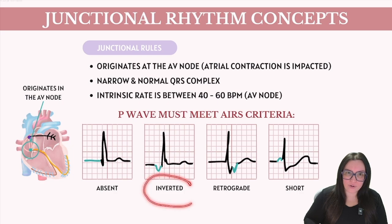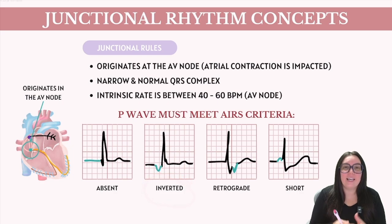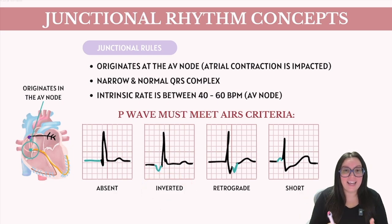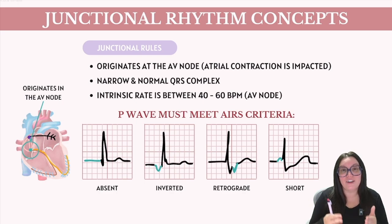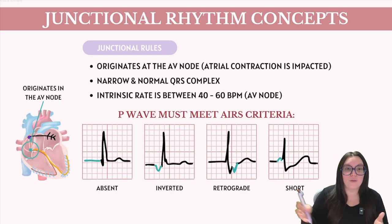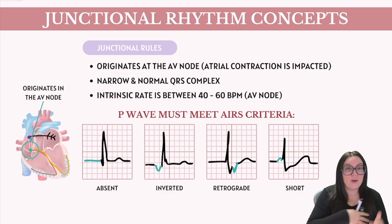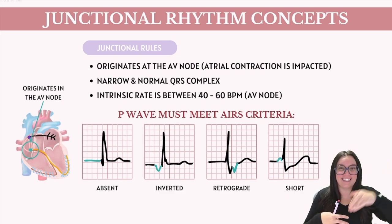Next up we have inverted P waves. In some cases, an electrical impulse can get through and it's going to travel back up into our atria. We call this retrograde conduction. This backwards movement causes that P wave to appear inverted on our ECG because the electrical vectors are moving from the bottom of the atria upwards rather than the top of our atria down.